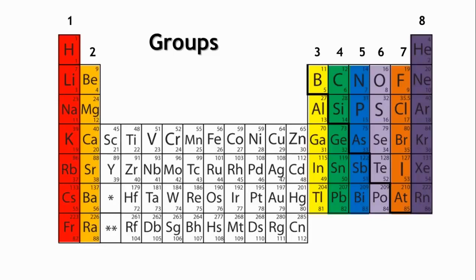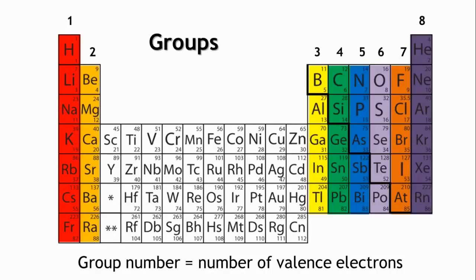The number of electrons in the outer shell governs elements' reactivity, which is why elements in the same group have similar properties. The group number can tell you how many electrons are in this shell.